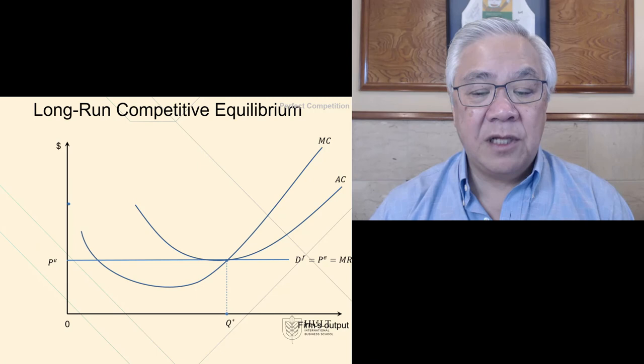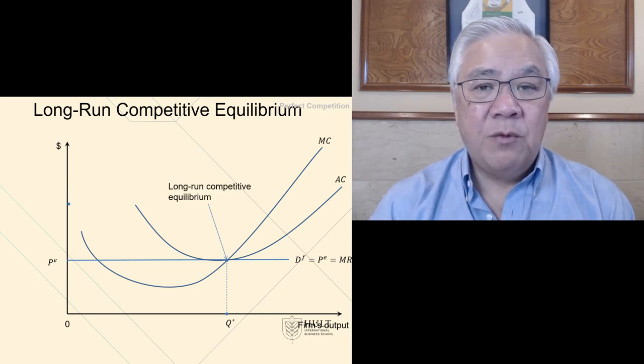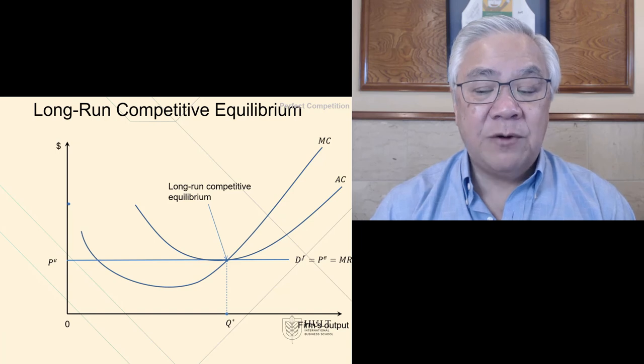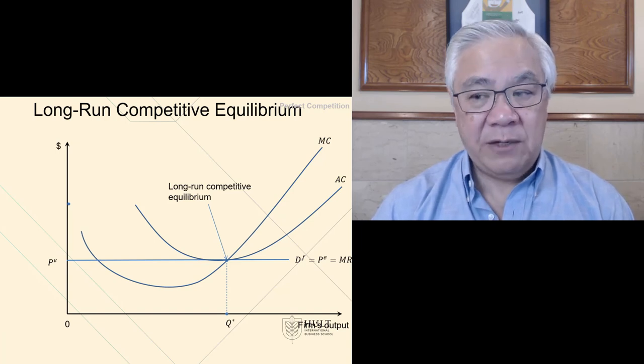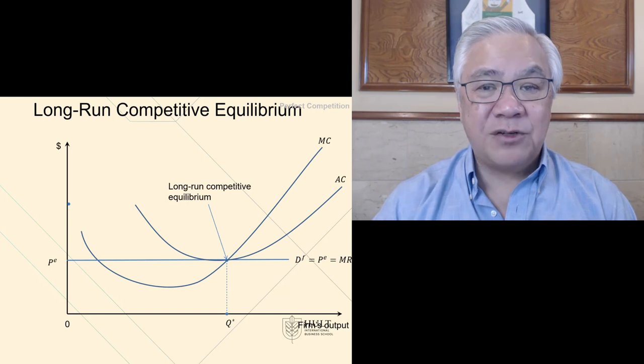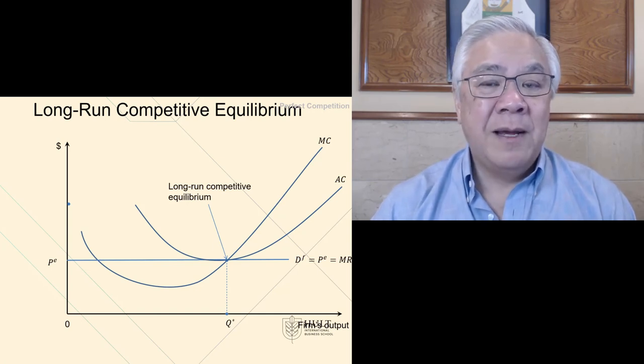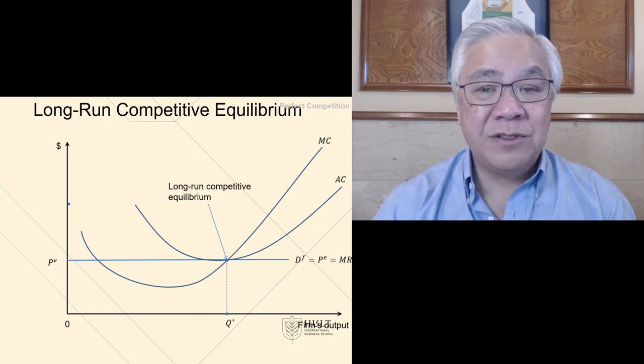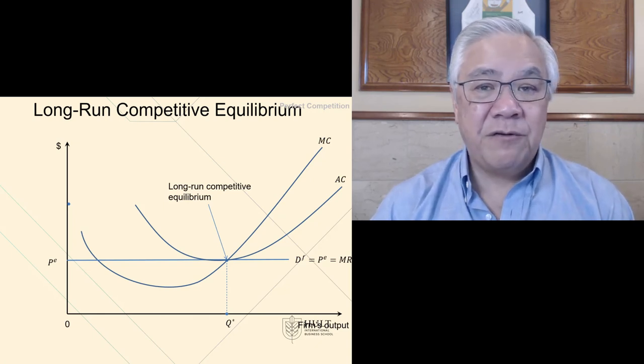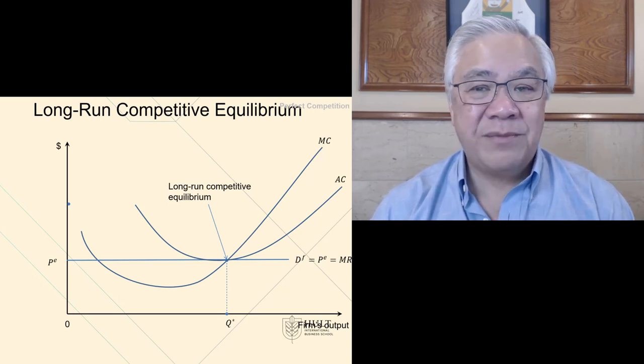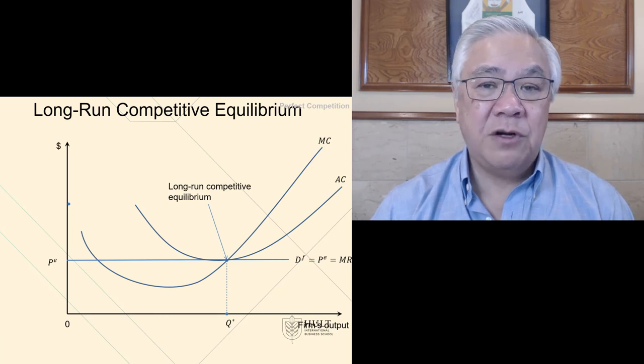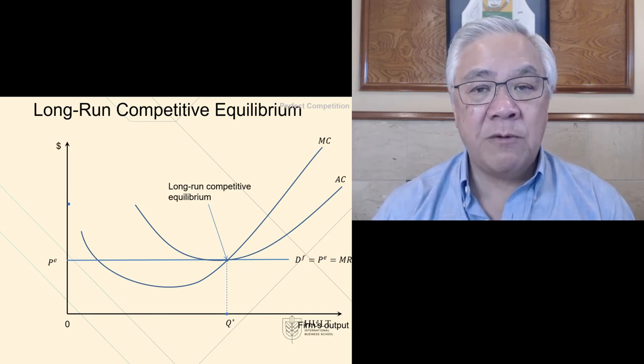In the long run, what happens? Well, in the long run, we reach this point where the marginal cost equals the average cost, which equals the price and that is long run equilibrium because at that point, there's no incentive to enter or exit. There's no competitor or no firm that is losing money because their average costs are equal to the price. There's also no firm that could enter and dramatically change the price because we all have the same cost structure. So therefore, there's no entry or exit and we are at long run equilibrium.